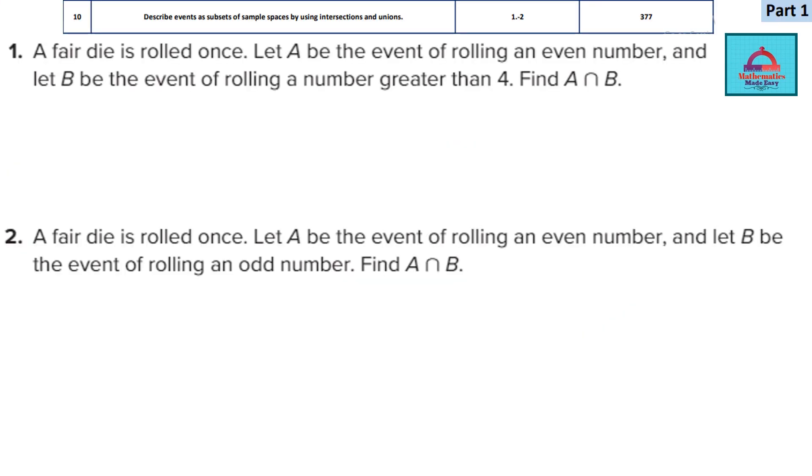Learning objective 10, this is the last video on part 1 for this session for grade 9 elite. The learning objective says describe events as subsets of sample spaces by using intersections and unions. This question asks you on intersection. If I write A intersection B means I need the common outcomes which are there in both A and B.